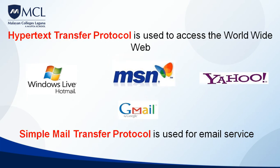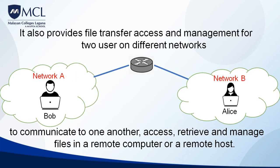The protocols underlying the application layer include the Hypertext Transfer Protocol — HTTP — which most of you are familiar with. This is what we use to access the internet or the World Wide Web. To access email and send emails, the protocol used is the Simple Mail Transfer Protocol. The application layer also provides file transfer access and management for two users on different networks so they can communicate even if they are remote from each other.